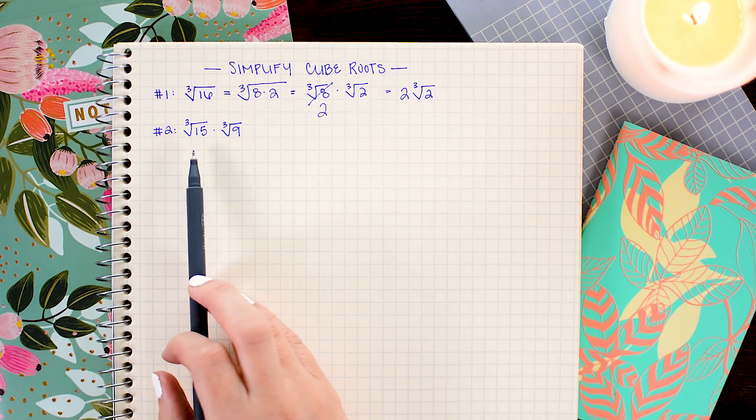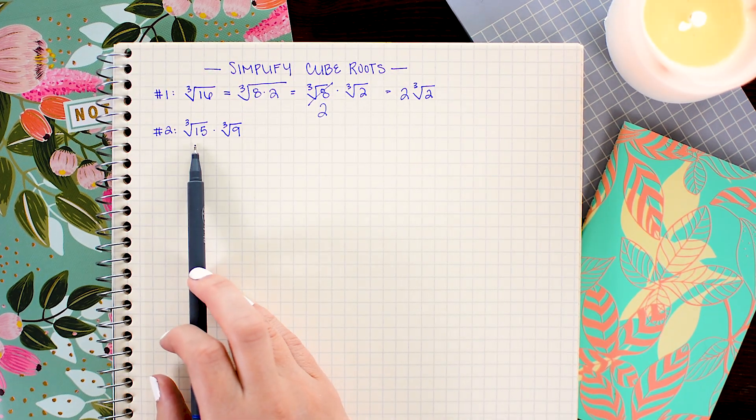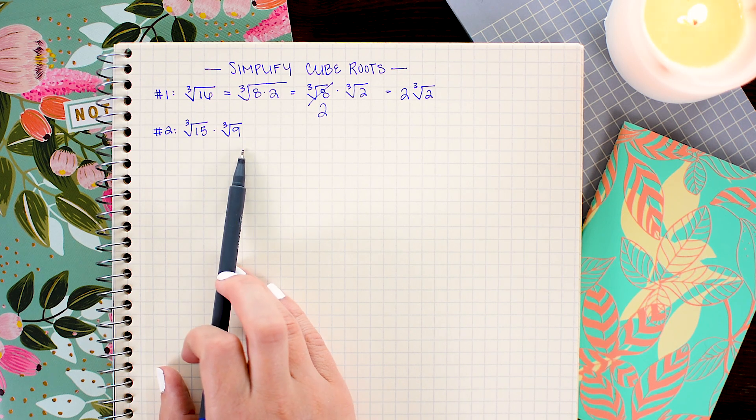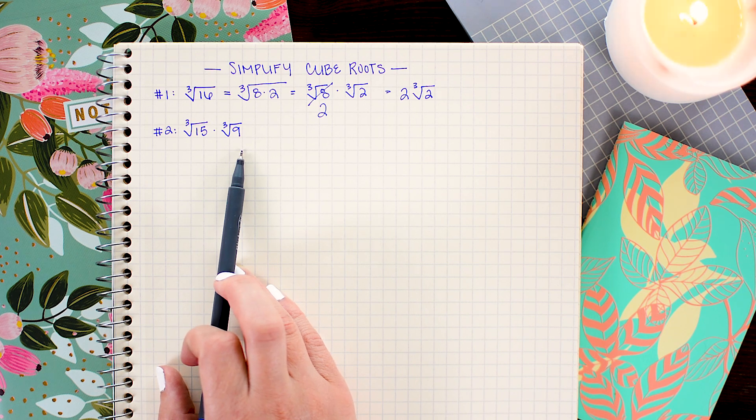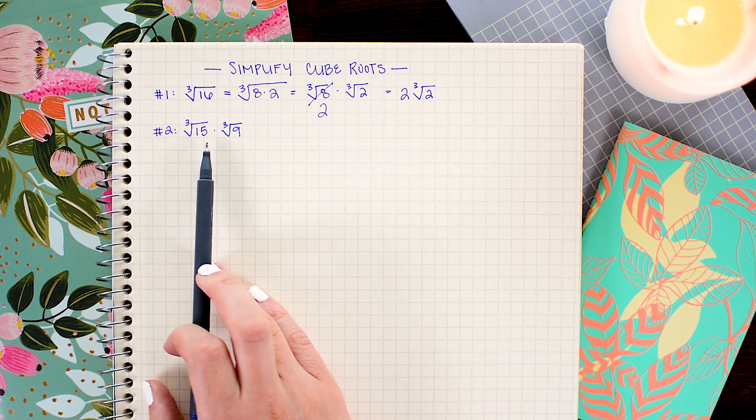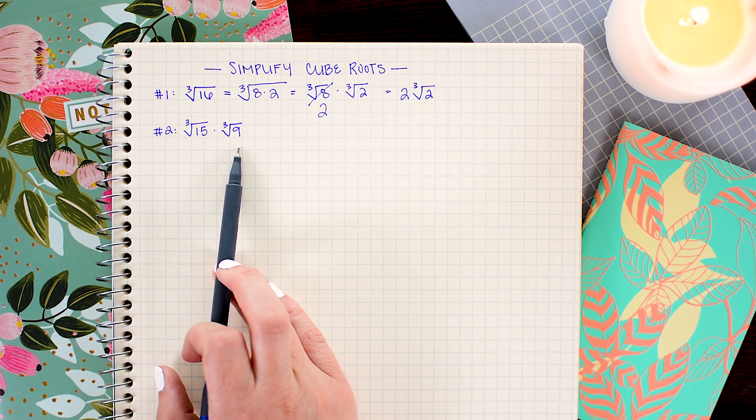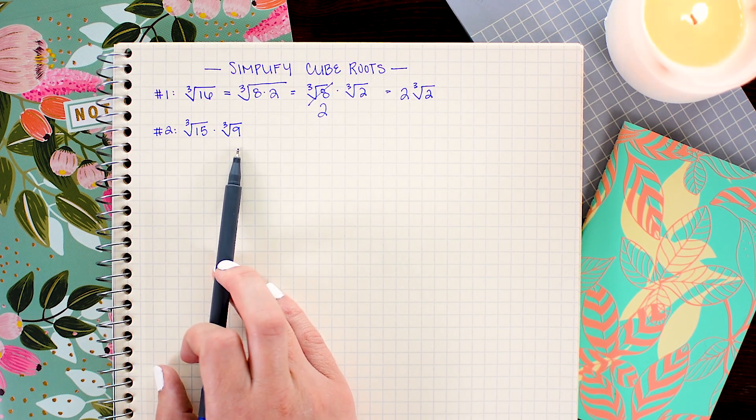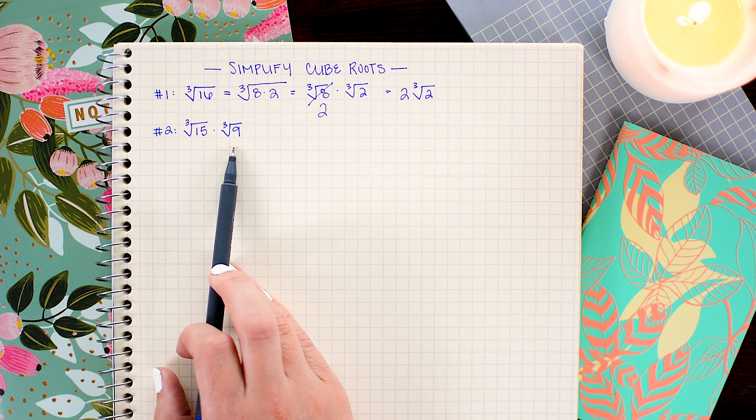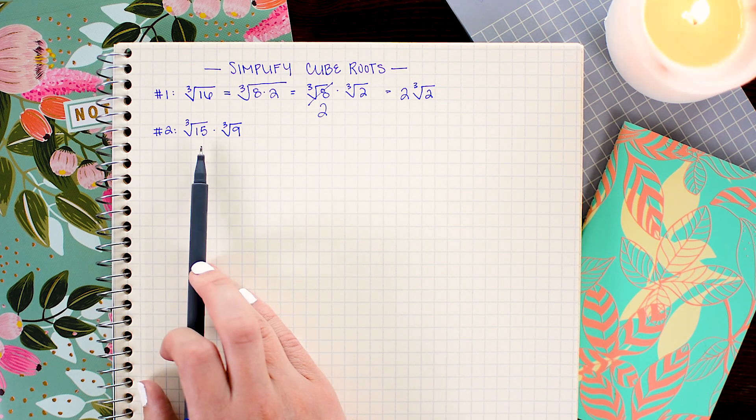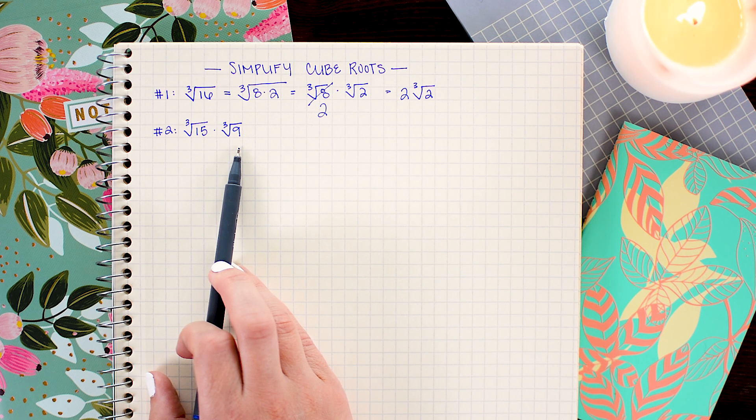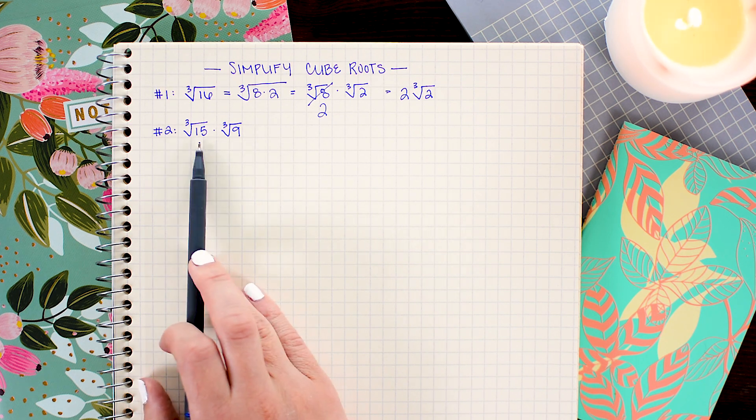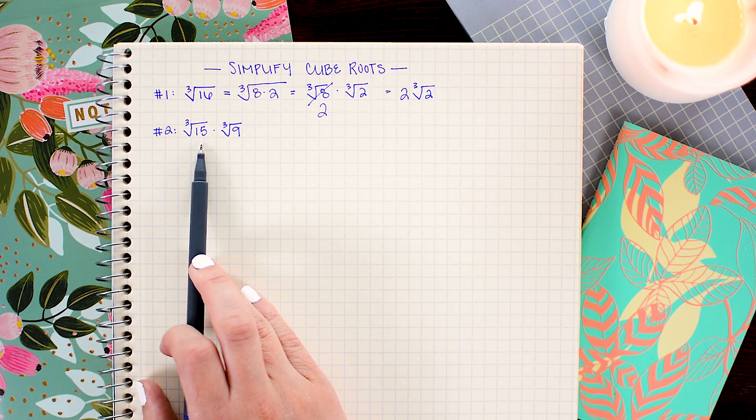In this second problem, we are going to reduce the cube root of 15 times the cube root of 9. When you first look at this problem, you probably think it can't be reduced because the only perfect cube that is useful for us, which is smaller than 15 or 9, is 8, and 8 is obviously not a factor of either of these numbers. But the trick here is that when I multiply these two together, their product makes a number that is reducible. So the first thing I'm going to do is just combine these into one cube root.